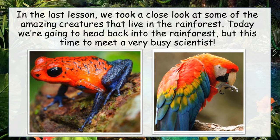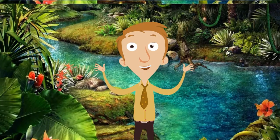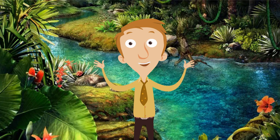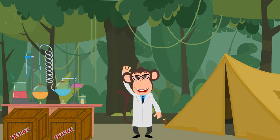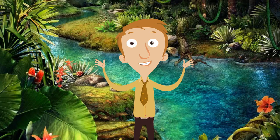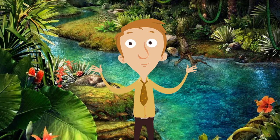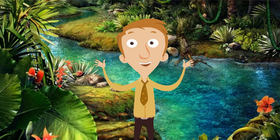In the last lesson we were talking about the animals and creatures that live in the rainforest. Today we're going to be heading back to the rainforest, but this time we're going to be meeting a human — a very busy scientist. Let's pack up our things and head deep into the Amazon rainforest one last time to meet Professor Isaac Harttrees, or just the professor. What kind of jobs do you think a rainforest scientist would have to do? Pause the video and write down two things.